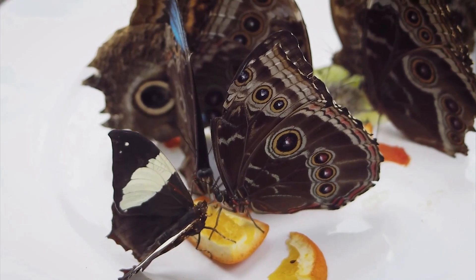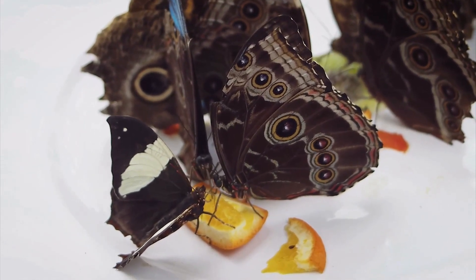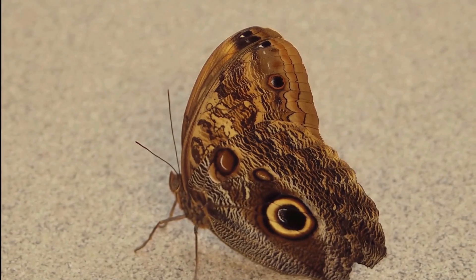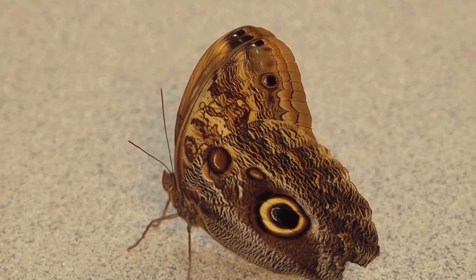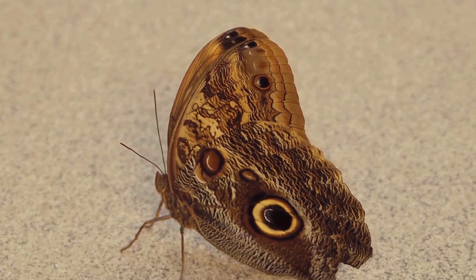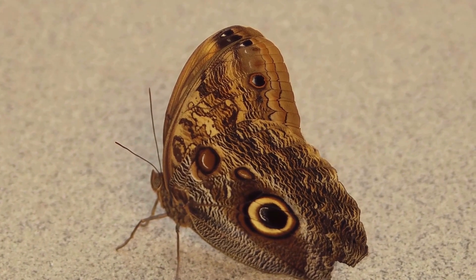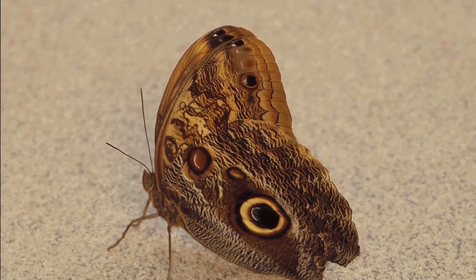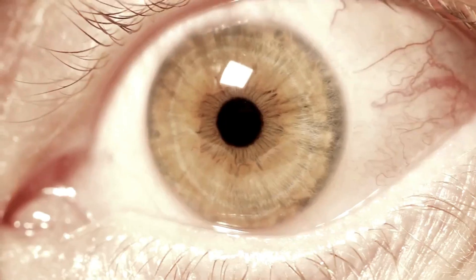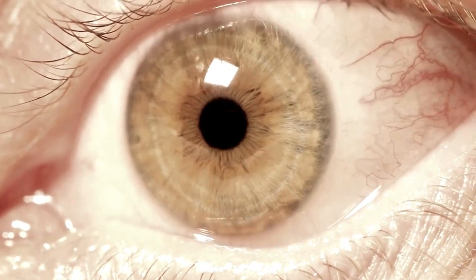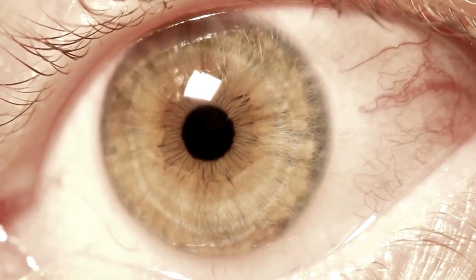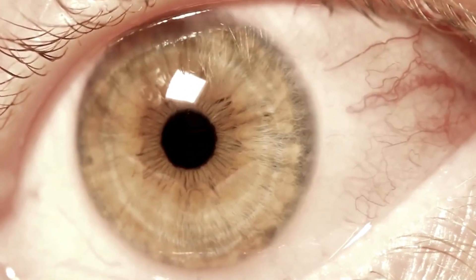Evolutionarily that's been crucial for survival, but it also means that our vision is inherently subjective, influenced by our individual brains and experiences. So it's less about recording a perfect image and more about creating a useful one. Think about how quickly our eyes dart around, constantly gathering information. It's not like a camera taking a single snapshot; we're actively scanning, focusing, and filtering what's important to us.